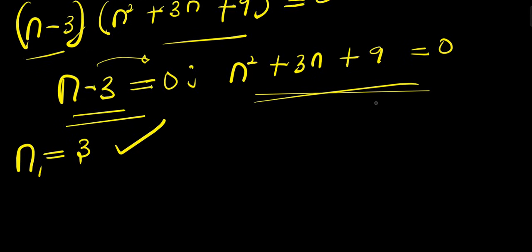So to solve this other quadratic equation, we are going to use the formula method because this might not be factorized. So we have n = (-b ± √(b² - 4ac))/(2a).